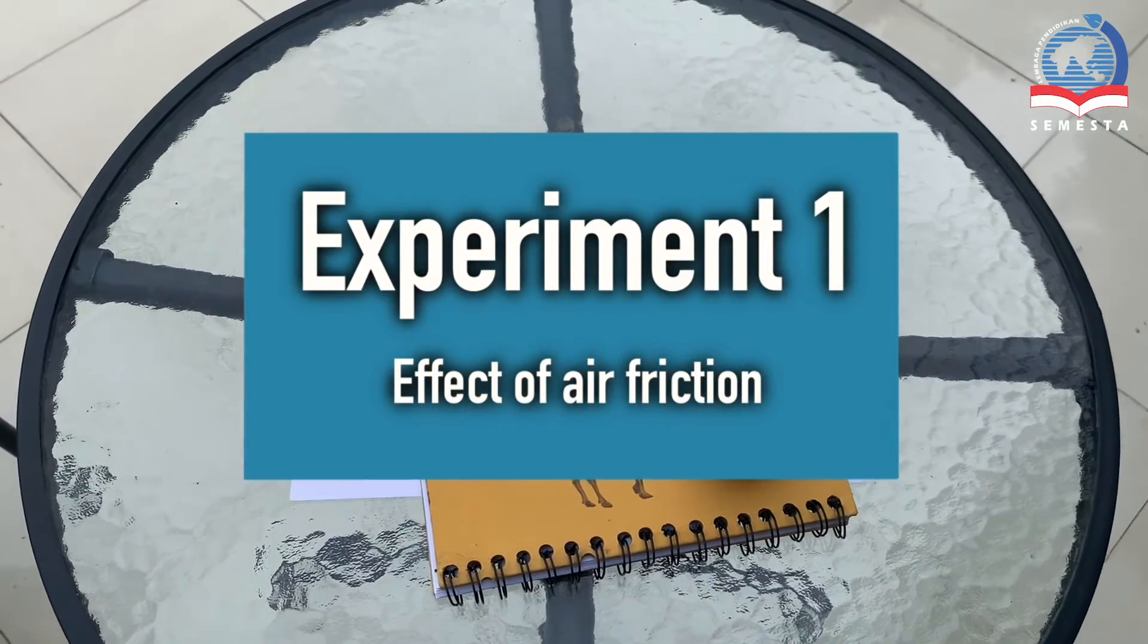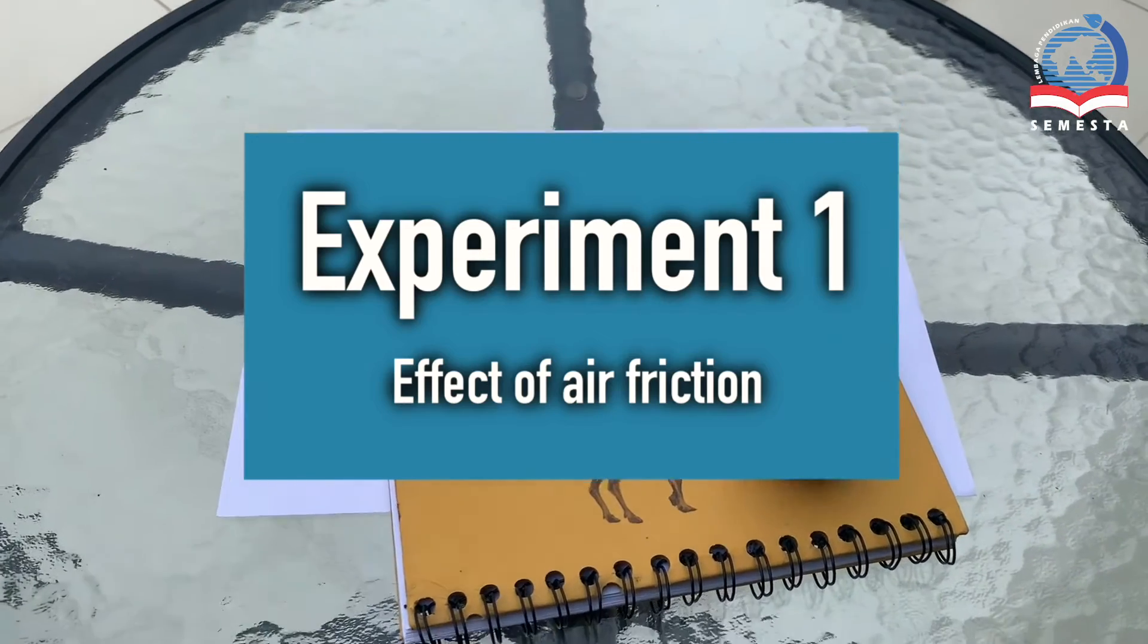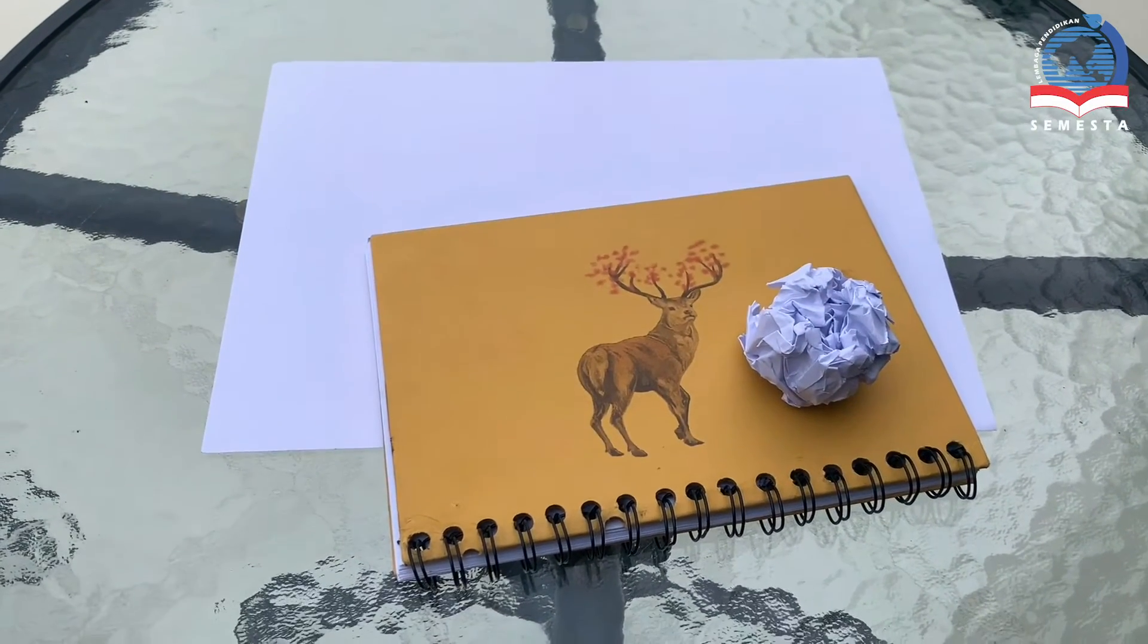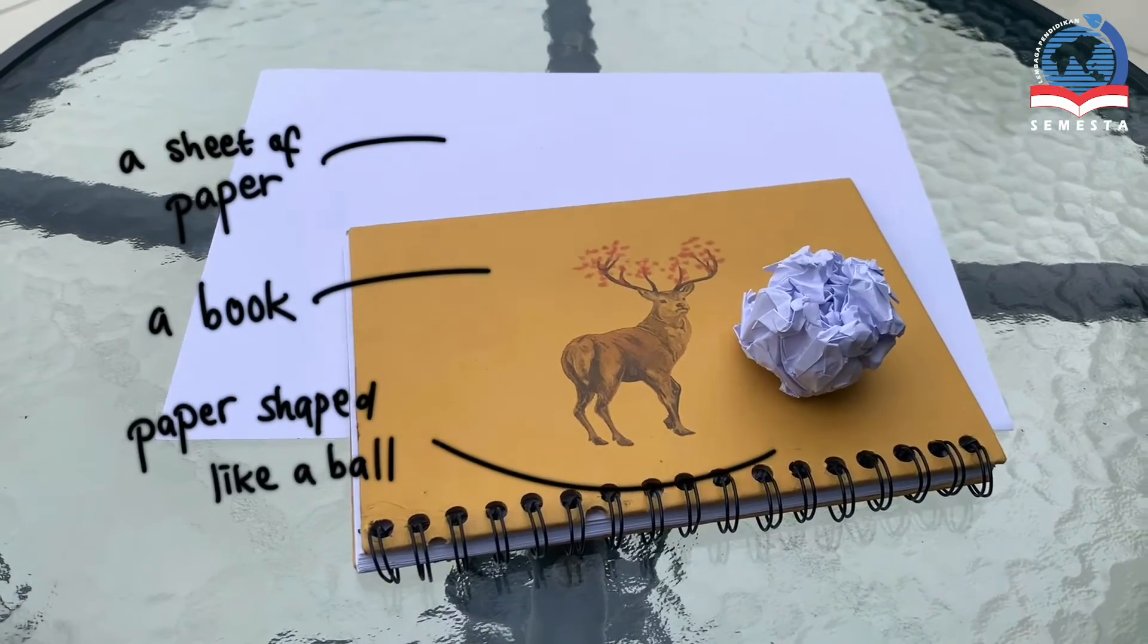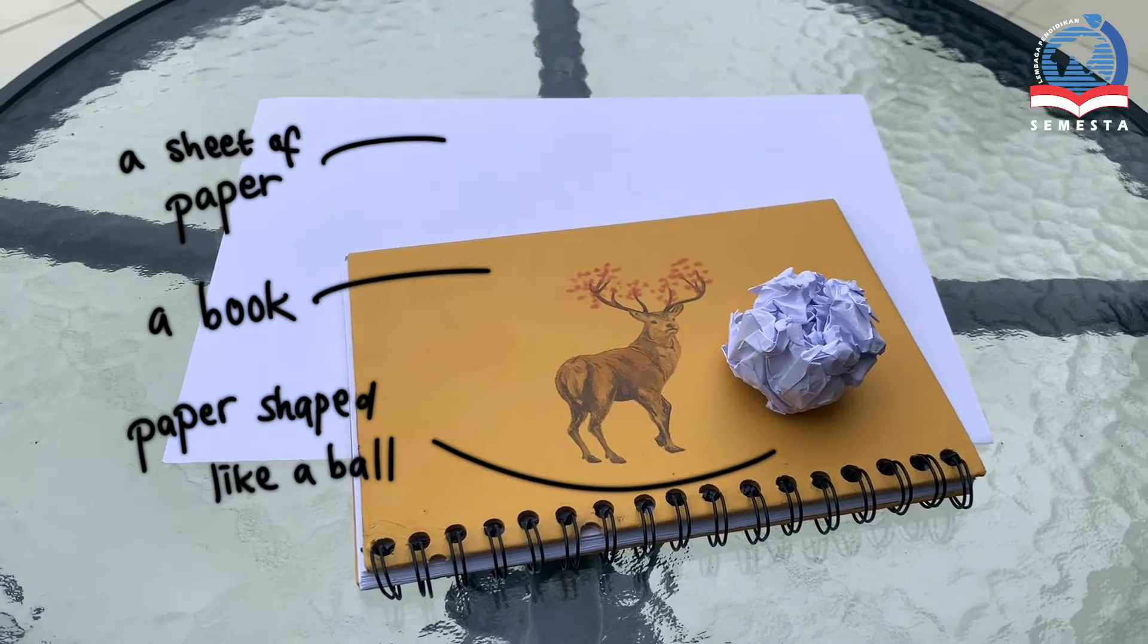Now for the first part of the experiment we are going to look at the effect of air friction. For this you are going to need a sheet of paper, a book, and a sheet of paper shaped like a ball.